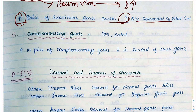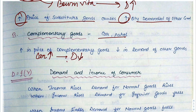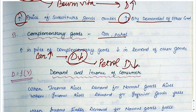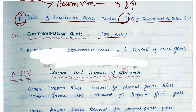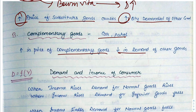Now complementary goods. Suppose the price of a car increases — demand for cars decreases. If people don't have a car, why would they use petrol? So the demand for petrol also decreases. In complementary goods, a price increase in one good leads to a decrease in demand of the other good.